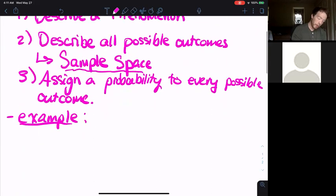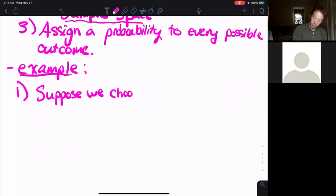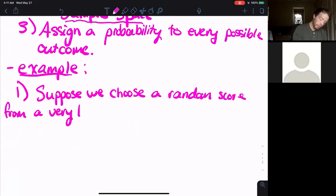I'm going to follow our three steps. First, I'm going to describe a phenomenon. Suppose we choose a random score from a very large population of test scores.